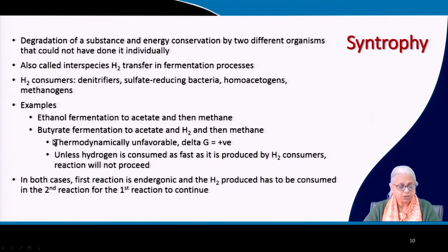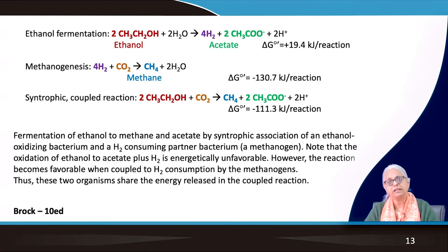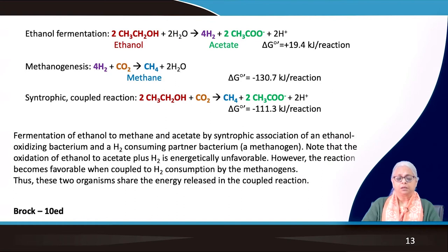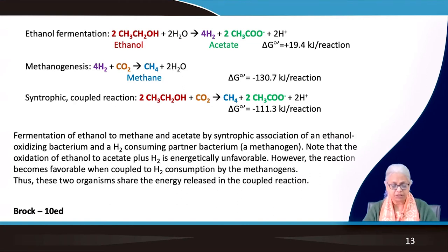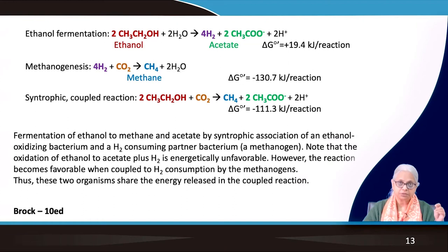In ethanol fermentation to acetate, ethanol is converted to hydrogen and acetate. The delta G for this reaction is positive, so by itself it gives no energy to the bacteria. However, when an ethanol-oxidizing bacterial species is in syntrophic relation with a methanogen, the methanogenic reaction (H₂ + CO₂ → methane) is favorable. When these two reactions are combined by the two species in syntrophy, the net delta G is negative and therefore the process is possible.